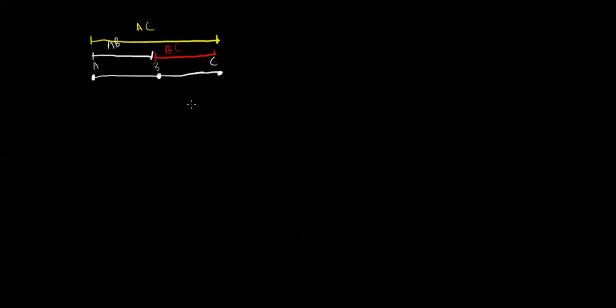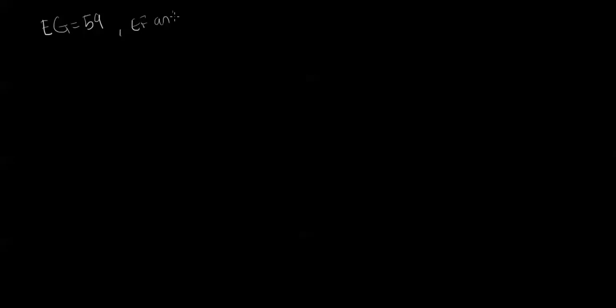Now we're going to look at an example of using the Segment Addition Postulate. The information we're given is that EG equals 59, and we have to solve for EF and FG. We're also given the number line containing points E, F, and G with F in the middle. We know that EF is 8X minus 14 and FG is 4X plus 1.